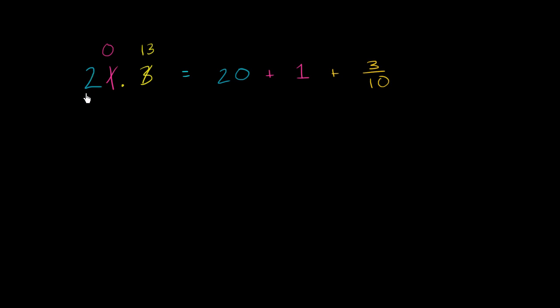So we still have 2 tens. Now we have plus 0 ones. And we essentially wanted to write that 1 that we took away from the ones place in terms of tenths. So if we were to write this in terms of tenths, it would be 10 tenths plus the 3 tenths that were already there, plus 3 tenths. And so this is going to be equal to 13 tenths.